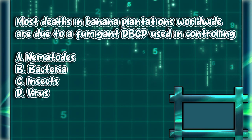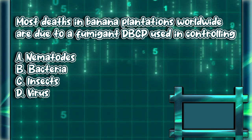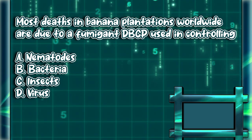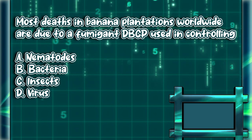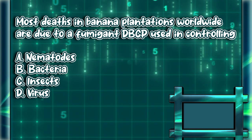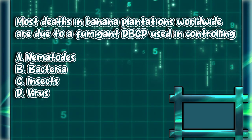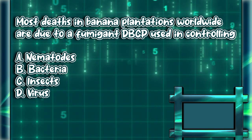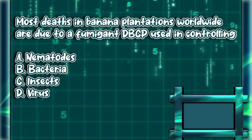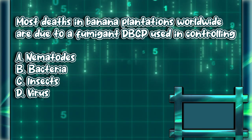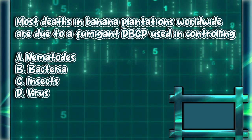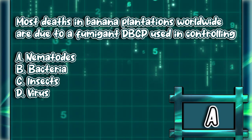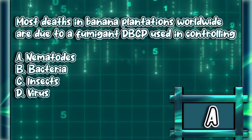Most deaths in banana plantations worldwide are due to a fumigant DBCP, used in controlling: A. Nematodes. B. Bacteria. C. Insects. D. Virus. The answer is letter A.